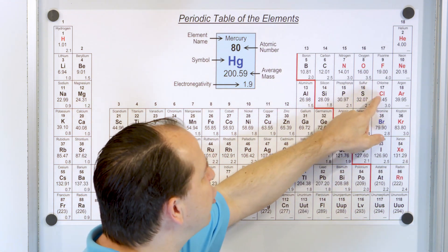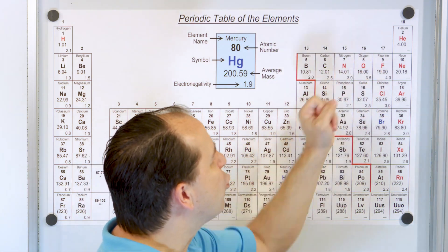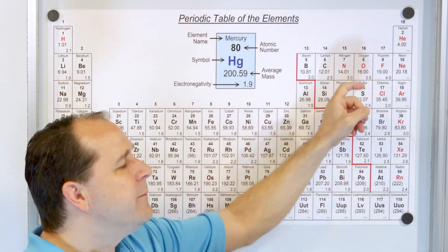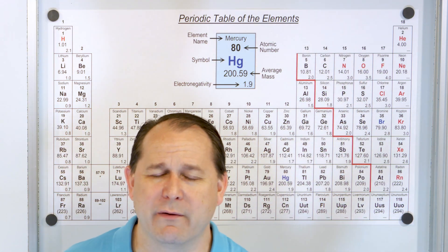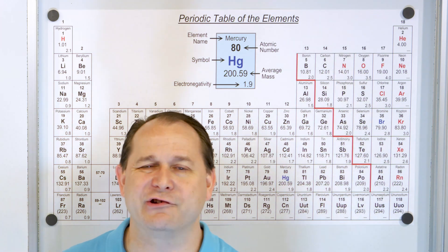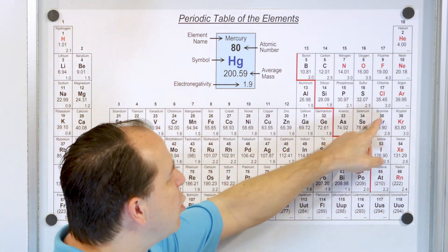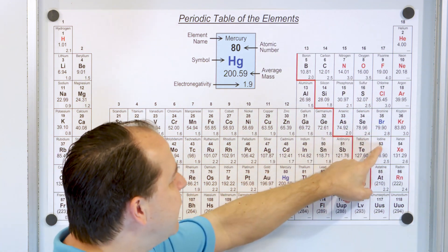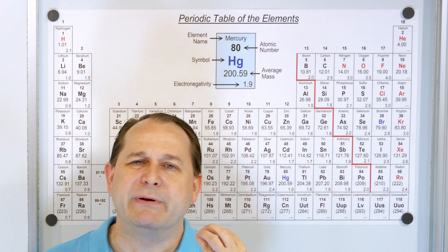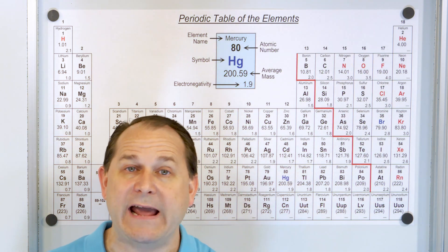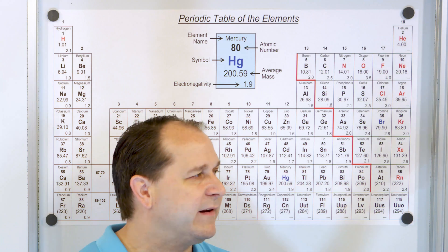So chlorine becomes chloride, fluorine becomes fluoride, oxygen becomes oxide — that's another one you know, because you've probably heard of oxidation or oxides. Bromine becomes bromide, iodine becomes iodide. When we put the IDE at the end, it's the name of the corresponding ion after it gains an electron.